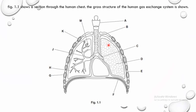Let's check out figure 1.1. Pause the video and try to remember the labels. Don't forget that B is the trachea. C is a bronchus, and J is also a bronchus — you can see that.